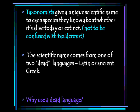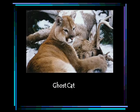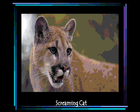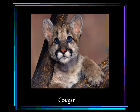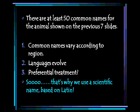So why would we use a dead language to name organisms? Here's an example in pictures: a devil cat, a ghost cat, mountain lion, screaming cat, puma, Florida panther — don't worry, that's its baby, it's carrying it — and a cougar. In case you didn't notice, those were all the same animal. There are at least 50 common names for that animal, depending on the area you live in. One reason we use a dead language is because common names vary according to region. If you live in one area you call it one thing, and in another area you call it something different. As a scientist studying this animal, you'd want just one name to describe all members of that species, not different names depending on the area.